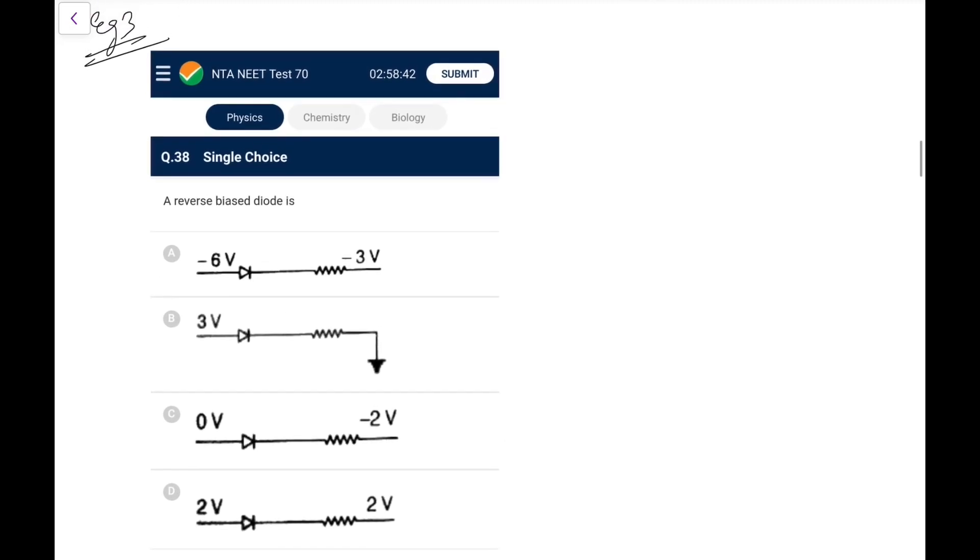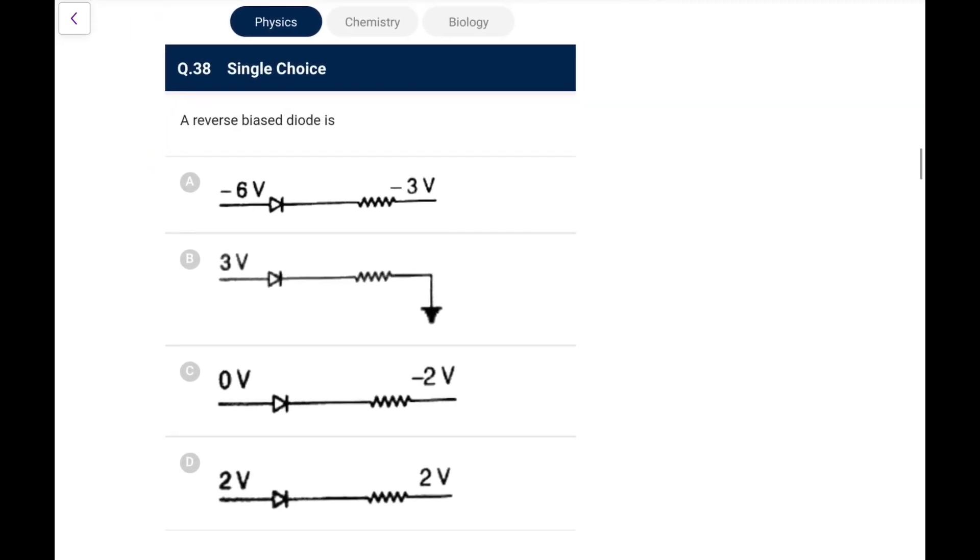Next one, this is another type of question where the connections are given and you have to check whether the diode is forward or reverse bias. So how to check? There it is minus 6, there it is minus 3. Whenever there is a resistor, forget that for checking, assume this is minus 3. So what we have: this is at a lower potential, this is at a higher potential. So it is a reverse bias. Check here, it is 3 volt, it is 0. For the timing, take it like this.